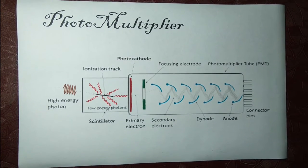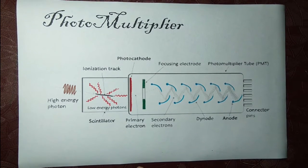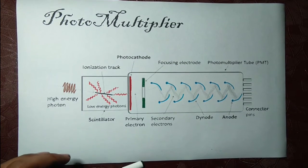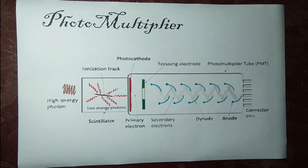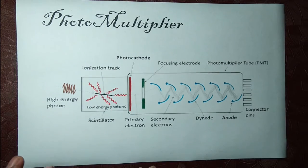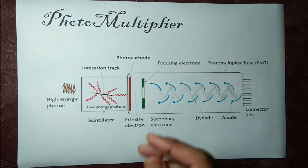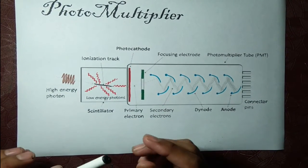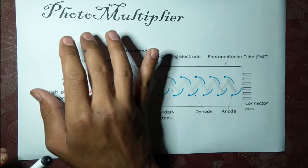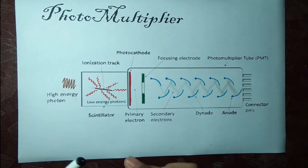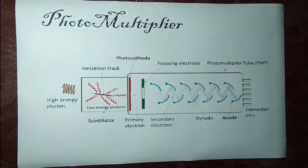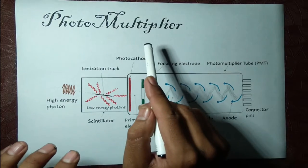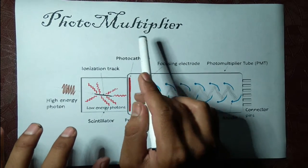Hello everyone and welcome back to Learn Daily Physics. Today we are going to study the photomultiplier. From its name we can see it consists of two things: photo and multiplier. Photo means light, and multiplier means we are multiplying light.